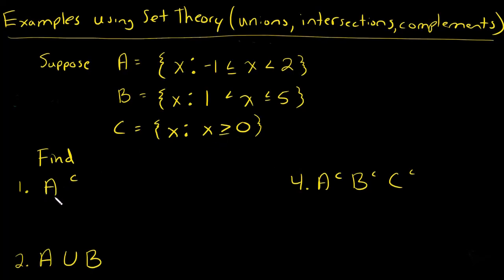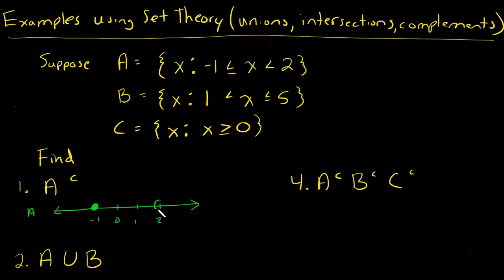First, let's find the complement of A. It's helpful to draw out what A is on a number line. We have negative 1, 0, 1, 2. Drawing out a number line is very helpful in these types of problems. A includes negative 1 but does not include 2. The complement will be everywhere else in the sample space — all real numbers except where A is.